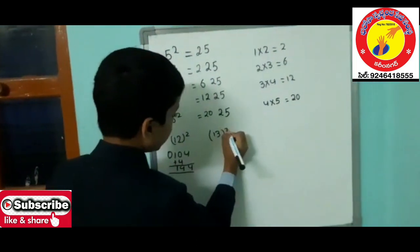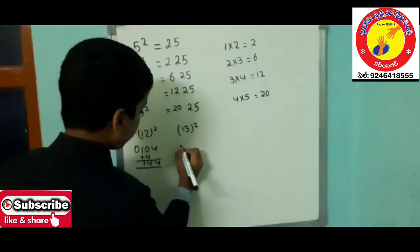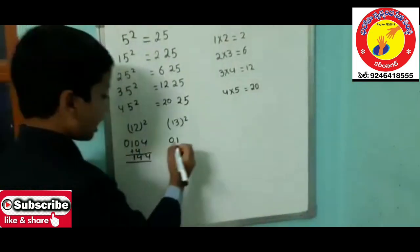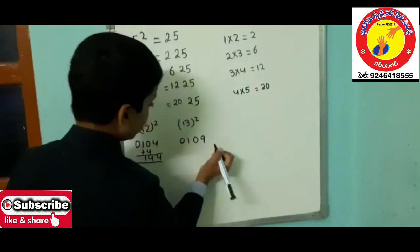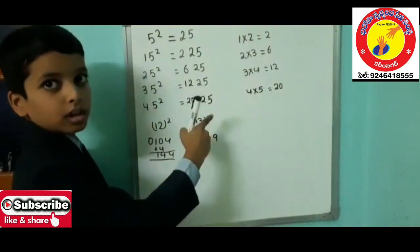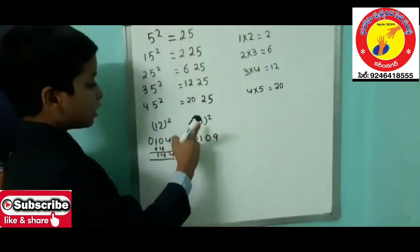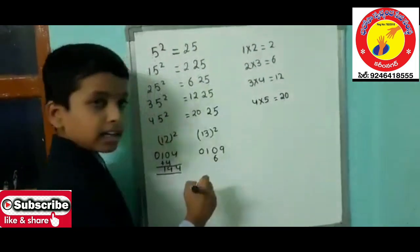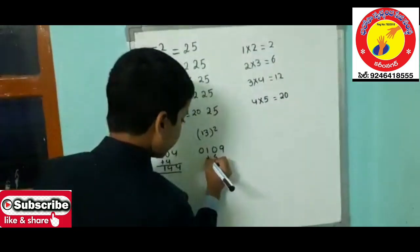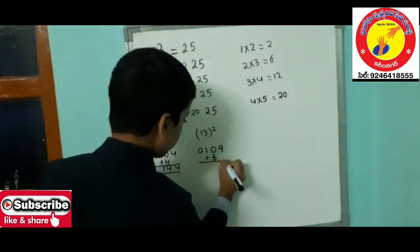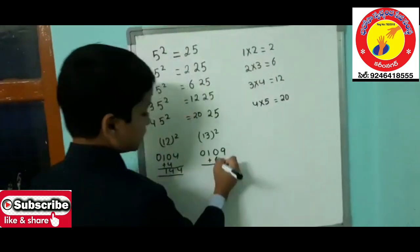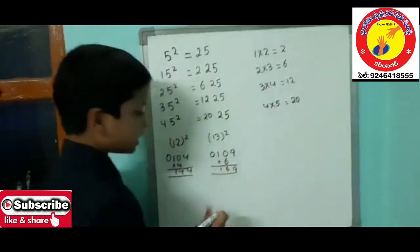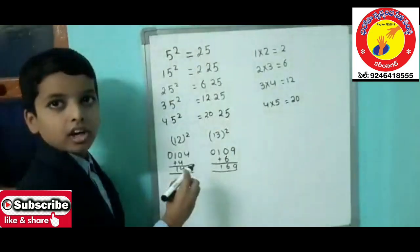For 13 squared: 1 squared is 1, write as 01. 3 squared is 9, write as 09. Multiply the digits: 1 times 3 is 3, then 3 times 2 is 6. Leave 1 space and write 6 in the tens space. Add them: 9, 0 plus 6 is 6, 1. Therefore 169 is the square of 13.